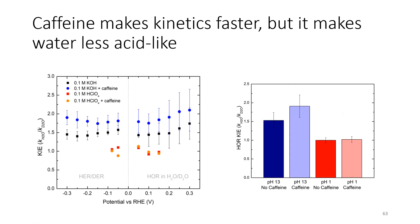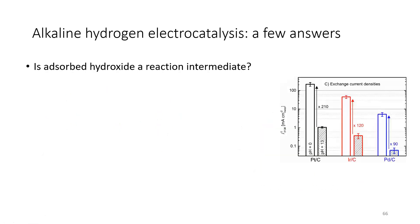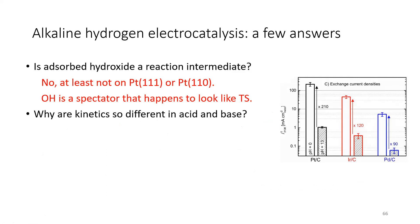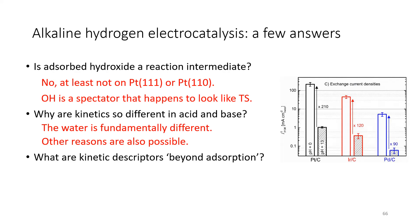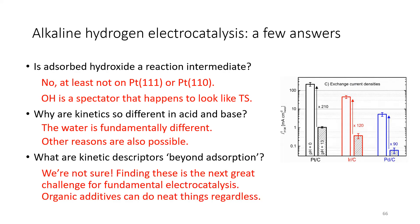All right, so I brought up a lot of questions at the beginning, and I think we've answered some of them. We're really sure about this one. Hydroxide is not a reaction intermediate on platinum 111 or platinum 110. OH is a spectator. It happens to look at the transition state, and that's why you do sometimes get this correlation between rates and OH adsorption energy, but it's not because of classic BEP relationships. Why are the kinetics so different in acid and base? Well, we're still working on it, but we're pretty sure the water is different. Water is slower in base. And then the last question, what are the kinetic descriptors beyond adsorption? We're still working on that. I think that finding these is really the next great challenge for fundamental electrocatalysis. And regardless of what the reasons are, organic additives like caffeine can do some interesting things, and it's keeping us busy.